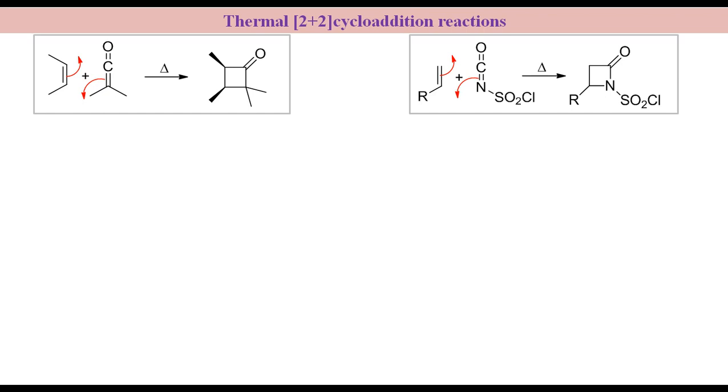In a [2+2] cycloaddition between alkene and ketene, HOMO of alkene interacts with the LUMO of ketene. Ketene has two pi-bonds to the same carbon atom lying perpendicular to each other.